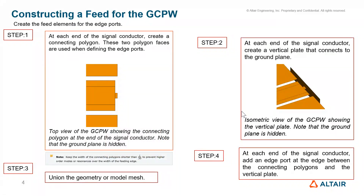The first step is to create the feed lines for the edge ports. We need to excite the structure using edge ports. At each end of the signal conductor, create a connecting polygon — these two polygon faces are used when defining the edge ports. In step two, at each end of the signal conductor, create a vertical plate that connects the ground plane.